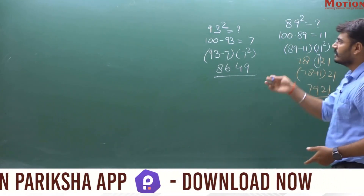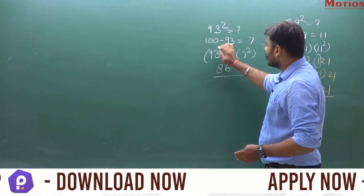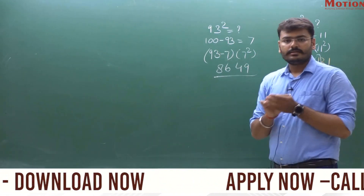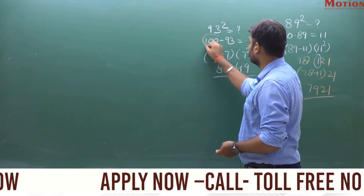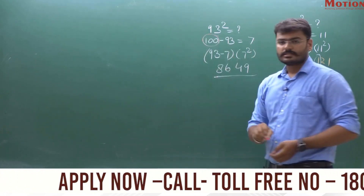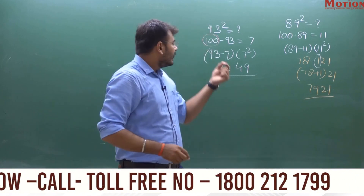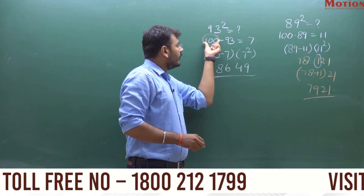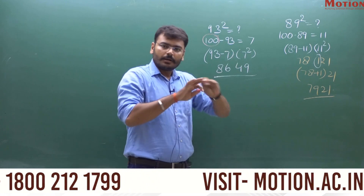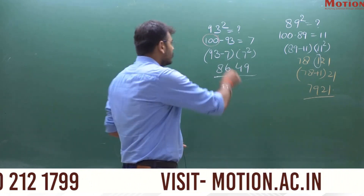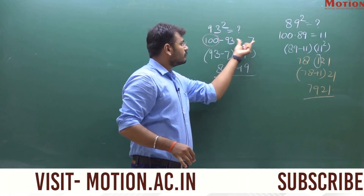Now let's take the third method, which we can solve more quickly. The simple idea is that 100 is your base number. You just need to find how far the given number is from 100. Once you find that value, your work is done. So for 93, 100 minus 93 is 7.